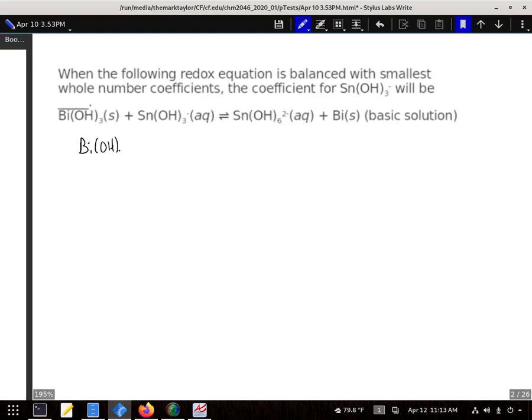I'll do the bismuth side first. There are no charges, so I need to balance my oxygens first. I'm going to add three waters to this side. That created six hydrogens here, but I only had three over here, so I need to add three H+ here.